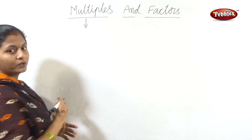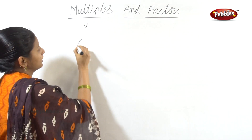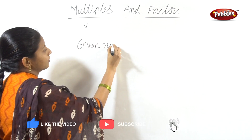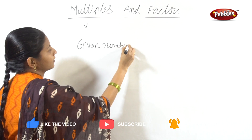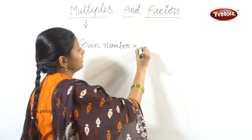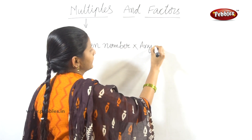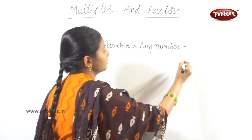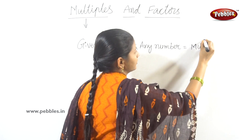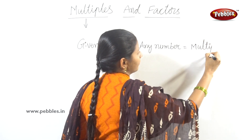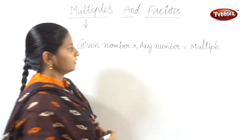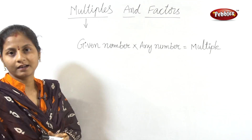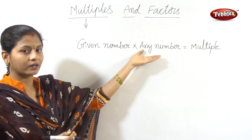Multiples is simple to explain. A given number multiplied by any number gives a multiple. We have one number, and its multiple is equal to a natural number.